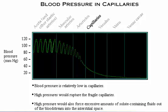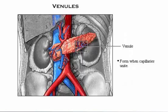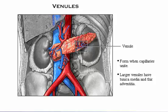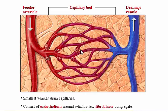Venules are formed when capillaries unite. In larger venules, both a sparse tunica media and a thin tunica adventitia are present. The smallest venules, which drain capillaries, consist entirely of endothelium, around which a few fibroblasts congregate.